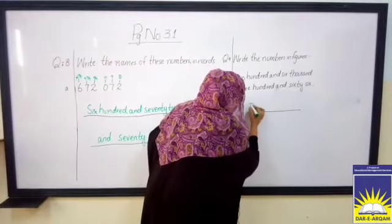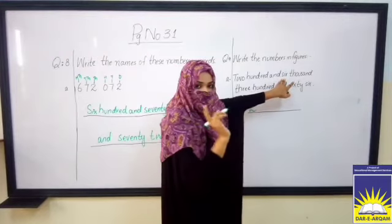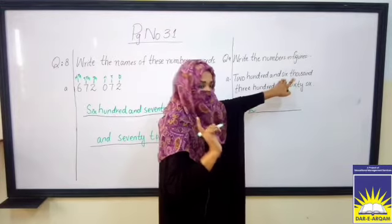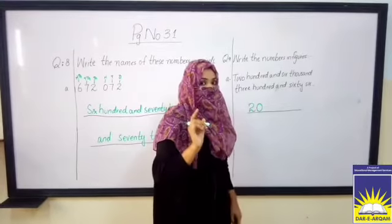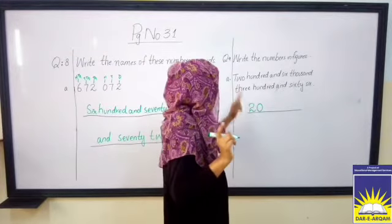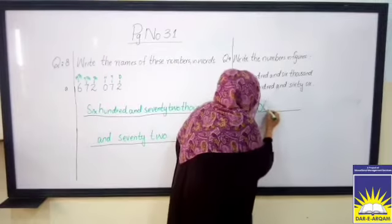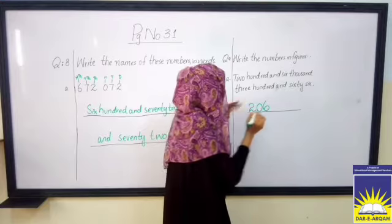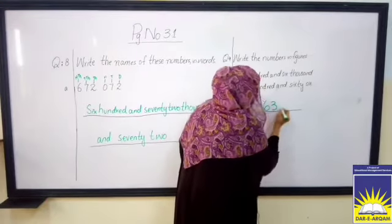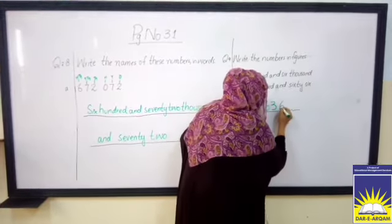Now you can write two hundred and sixty thousand. Here the 10,000 column is empty, so I put 0 in the 10,000 column. So 206,000. Next, here is 300. What is the number in the 100 column? Three. 366. Got it?